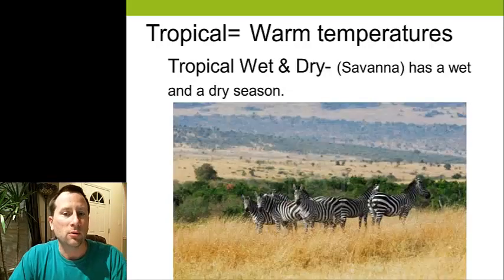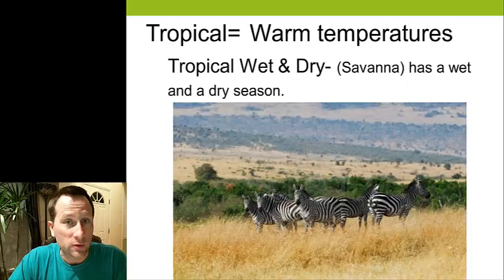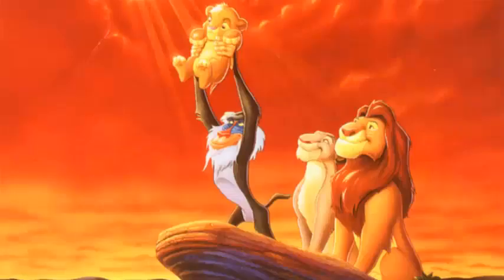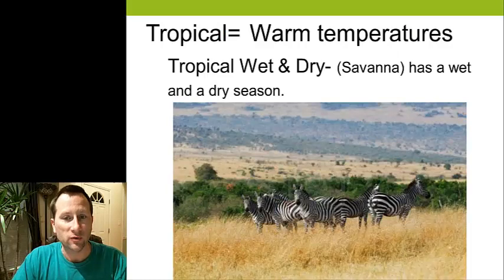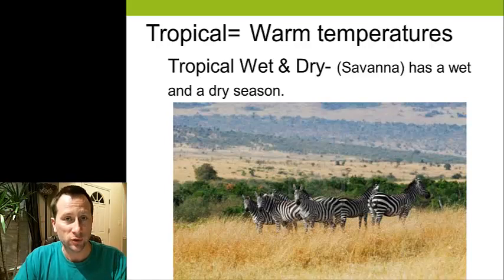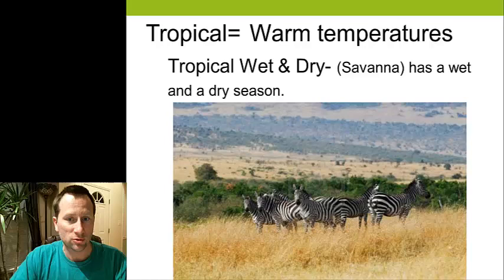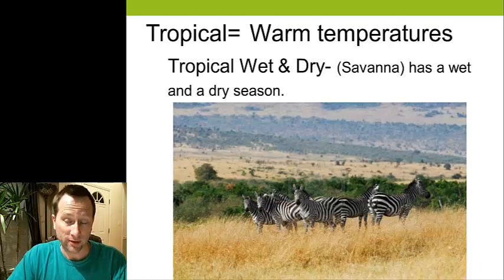Our third tropical climate is tropical wet-dry — this would be the savanna. If you've seen the Lion King, you've seen the savanna. It's grassland with a few small trees, and that's indicative of relatively little rainfall. Essentially they have two seasons a year: a wet season and a dry season, and that's the total of their seasonal variation on a yearly basis.